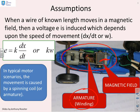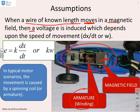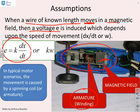Now, typically for a DC motor, what you assume is that if there is a wire of known length which is moving in a magnetic field, then you'll get a voltage generated along that wire, and the voltage depends upon the speed of movement of the wire in the field. So the type of equation you get is: the voltage E equals some constant times dx/dt. Or, because we've got an armature which spins, you might write it as k·omega, where omega is angular velocity.